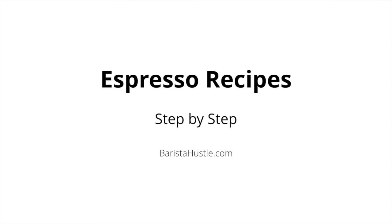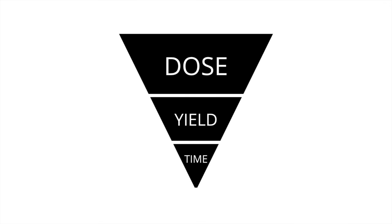For the last few weeks I've been detailing dose, yield and time as variables. Now we can really explore them as part of this system and see what happens to a coffee as we change our recipe. This particular system works by following a strict hierarchy of dose first, yield second and time third. If you adjust and lock in the variables in that order, espresso recipes become a whole lot easier.